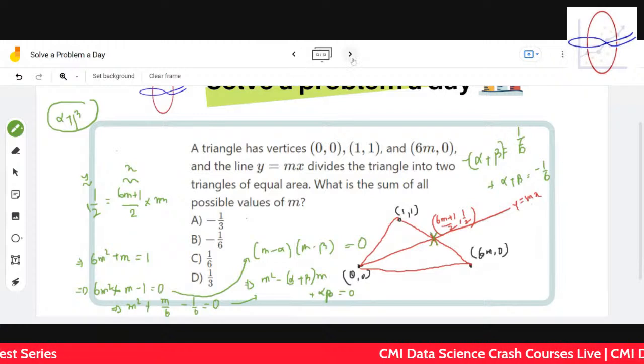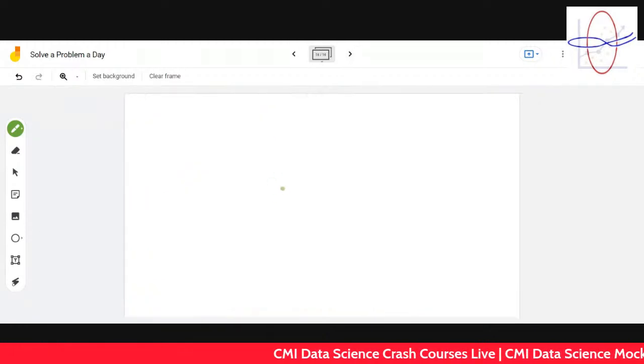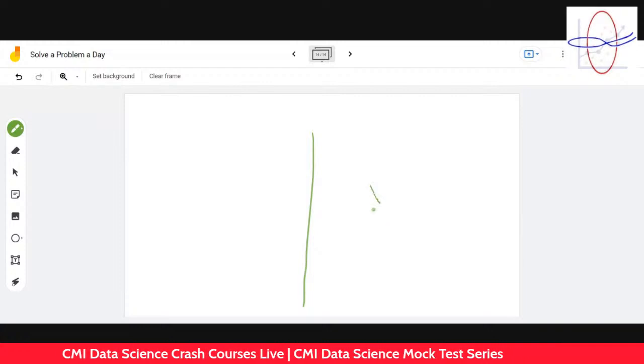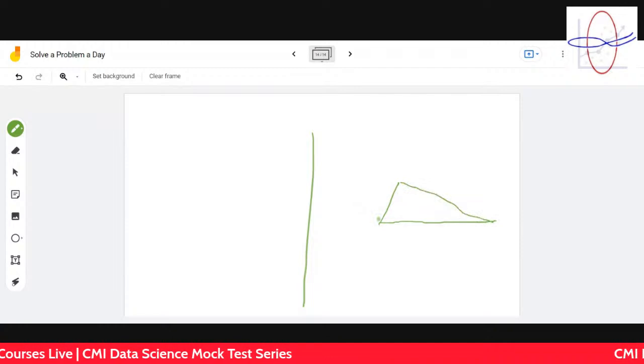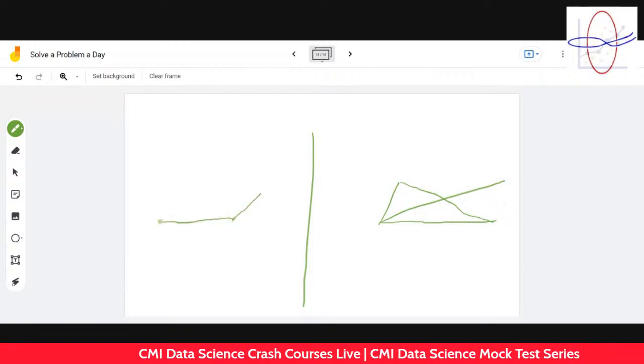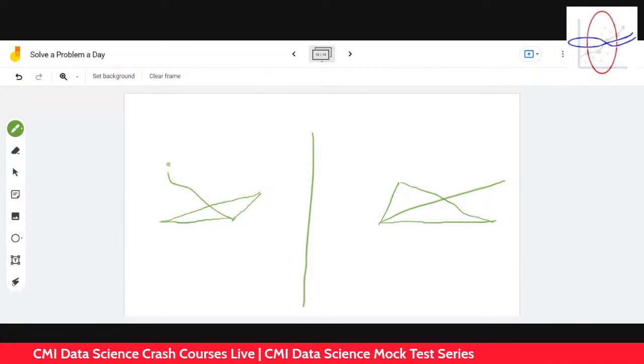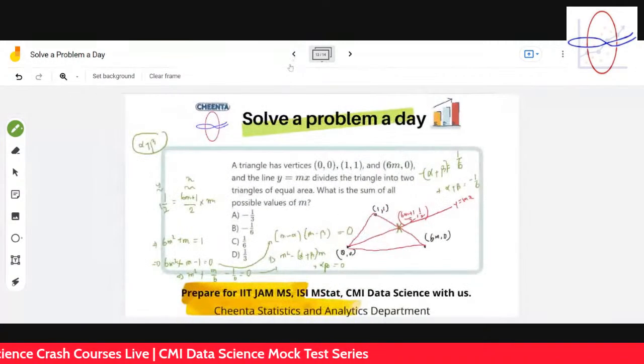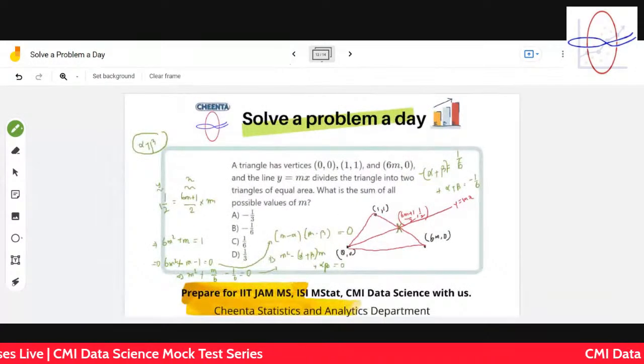If you observe and think about the diagram, why are there two possible values? This is one option where they're intersecting. Another option is where m is negative and it intersects here. There are two possible directions of m and hence two possible values of m.